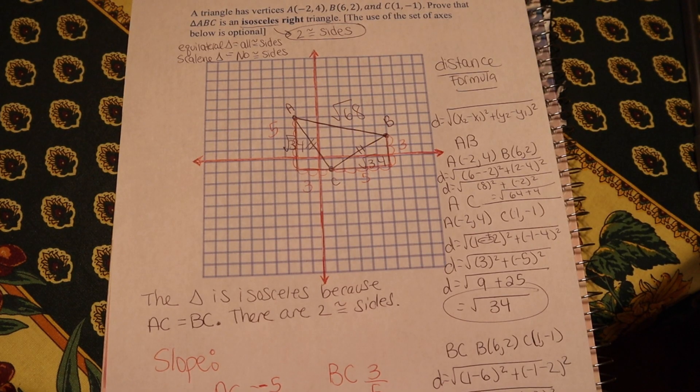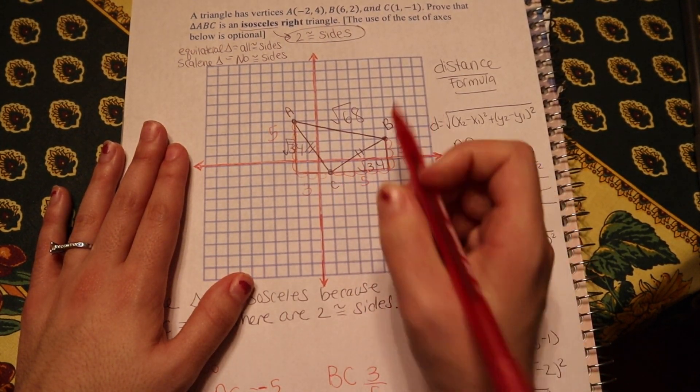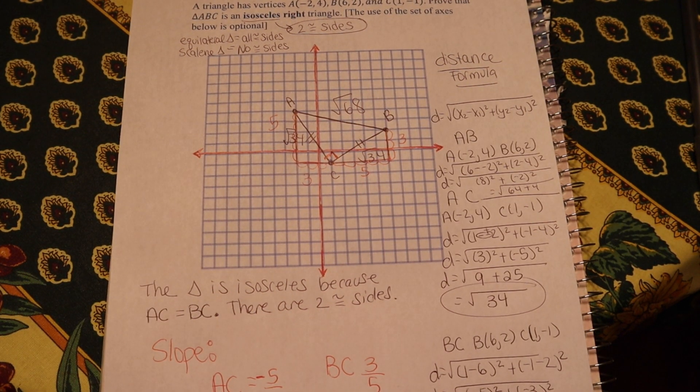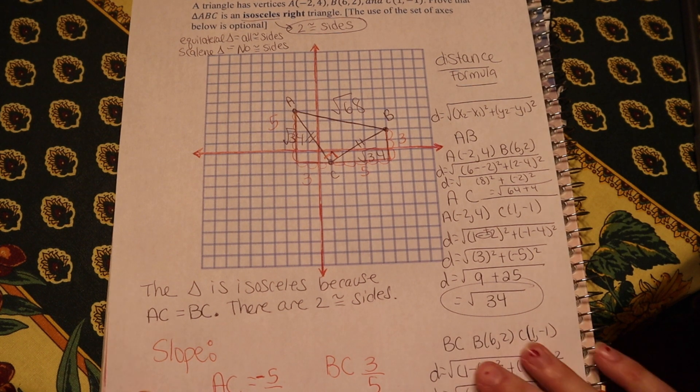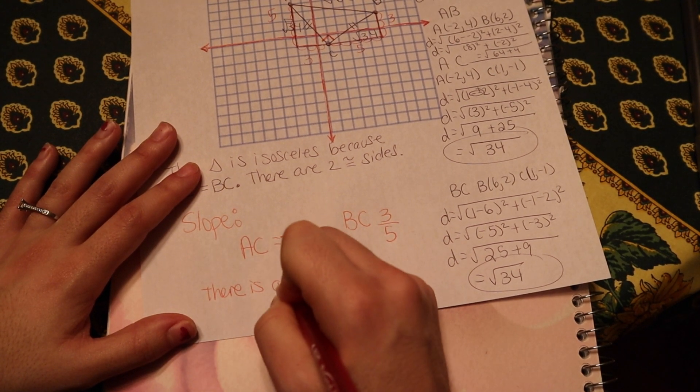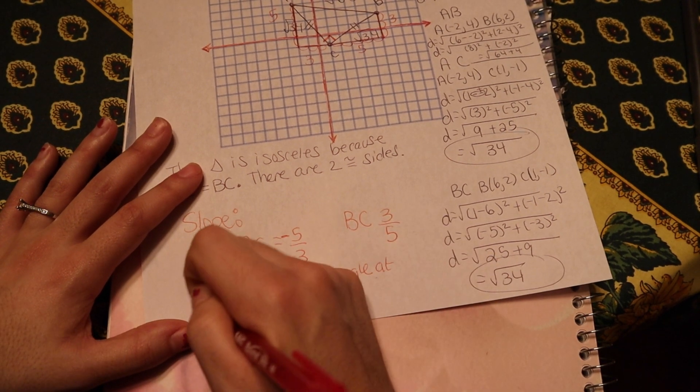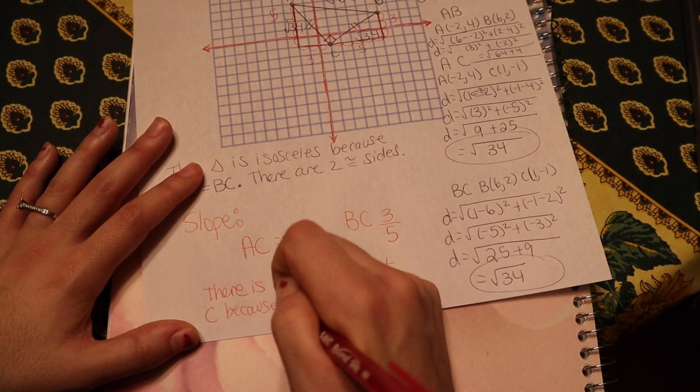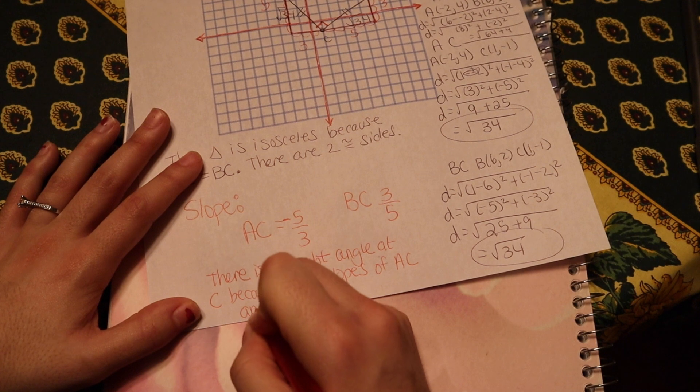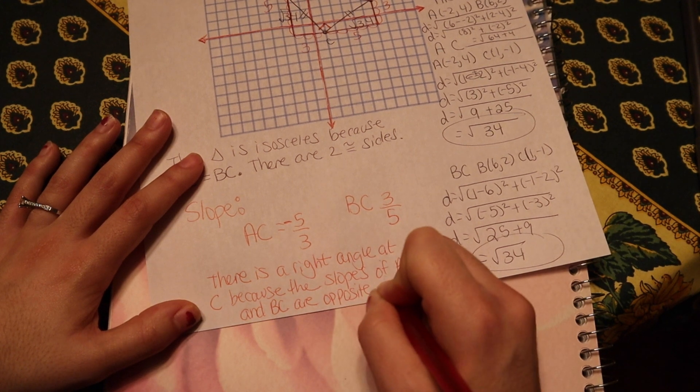The reason why I got the slope of those two lines is because this line and this line, these two lines, AC and BC, are the ones that are making the 90 degree angle. You want to make sure that you're picking the proper pair of lines that would intersect to make the 90 degree angle to check if there's a 90 degree angle. So now my explanation is going to be there is a right angle at C because the slopes of AC and BC are opposite reciprocals.